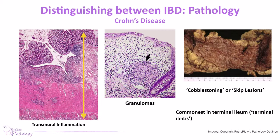Crohn's can affect anywhere, including around the anus, so you can get anal fissures, ulcerations around the anus, perianal disease, and abscess formations. You can also get aphthous ulcers — ulcerations that can affect the mouth as well. So that's really important to distinguish.